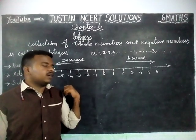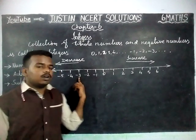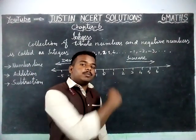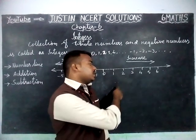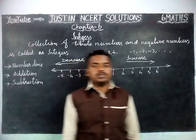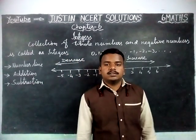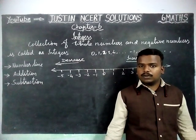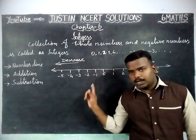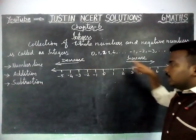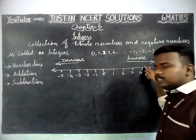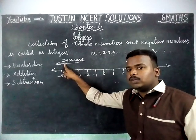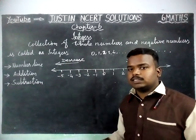If I am standing on minus 3 and moving right-hand side on the number line two steps, my value will increase. On the number line, if we move right-hand side, value will increase. If we move left-hand side, value will decrease. Simple concept.